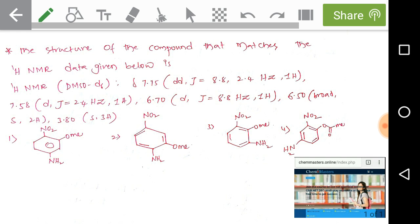Now we need to find the correct suitable organic compound by using the given HNMR spectral data. First we need to pick the important or easiest spectral values from which we can identify the functional groups or some parts of the particular organic compound easily.